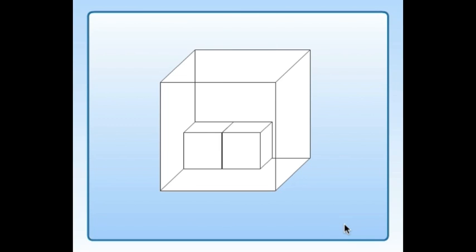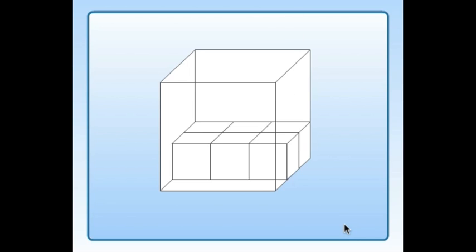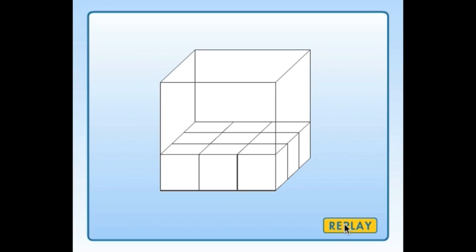Watch how the first layer of this cube is filled by smaller cubes or unit cubes. Notice how they don't overlap or have space between them? This first layer is made up of 9 unit cubes. We can also say 9 cubic units or 9 units cubed.